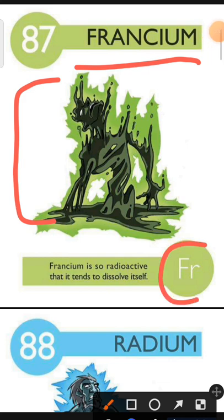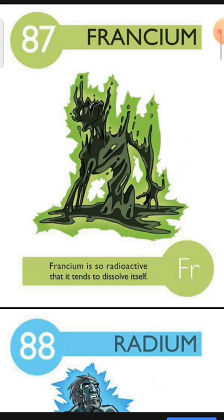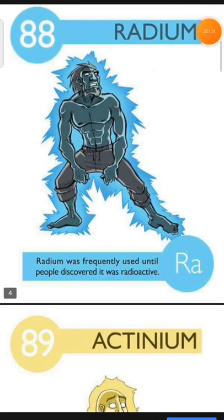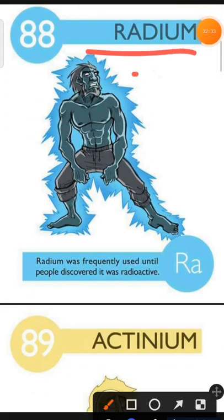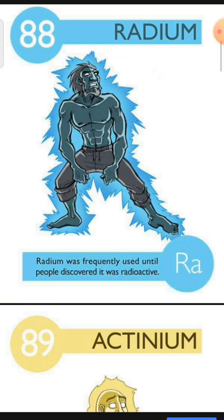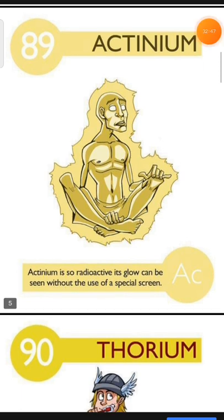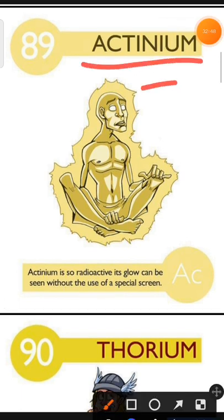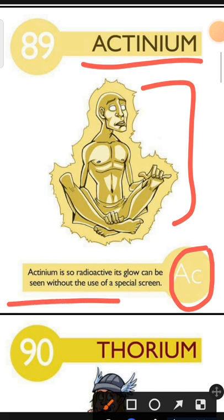Element number 88 is Radium. The characteristic of Radium is: Radium was frequently used until people discovered it was radioactive. Element number 89 is Actinium. The characteristic of Actinium is: Actinium is so radioactive its glow can be seen without the use of special screens.